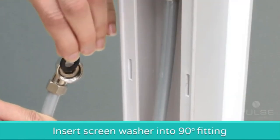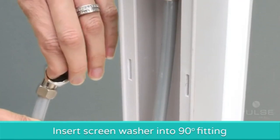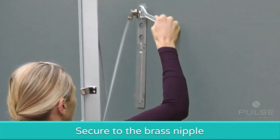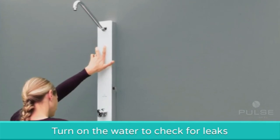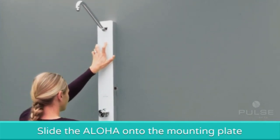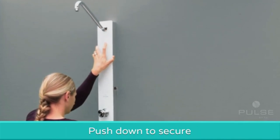Next, insert the washer with screen into the 90 degree fitting and secure to the brass nipple. Turn on the water and check for leaks. If no leaks are present, carefully slide the Aloha onto the mounting plate and push down to secure.